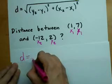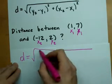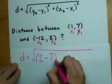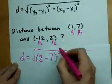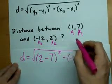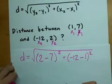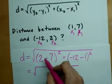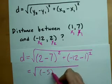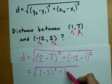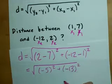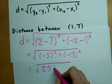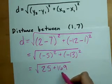The distance then is equal to the square root of y2 minus y1 squared plus x2 minus x1 squared. Let's take a look here. We've got negative 5 squared, and we've got negative 13 squared.